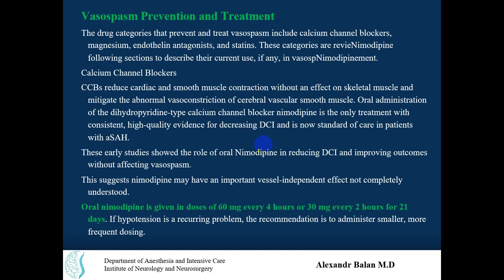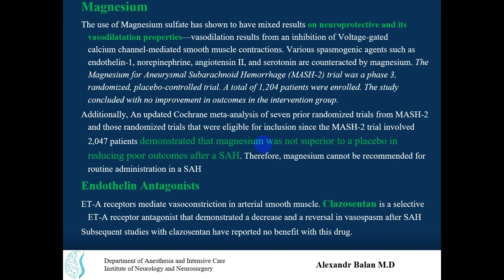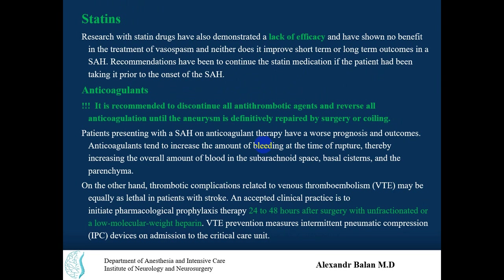If hypotension is a recurring problem, the recommendation is to administer smaller or less frequent doses. Magnesium sulfate has shown mixed results on neuroprotection and vasodilation properties, and was not superior to placebo in reducing poor outcomes after SAH. Other drugs like endothelin receptor antagonists such as clazosentan demonstrated a decrease and reversal in vasospasm after SAH. Statins lack efficacy for treating vasospasm, though they are good for decreasing cholesterol.